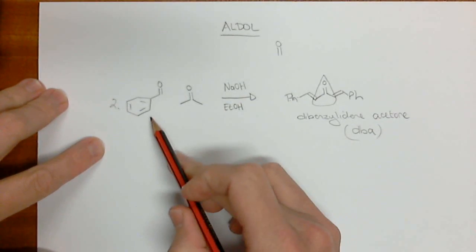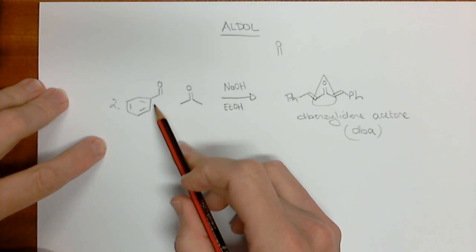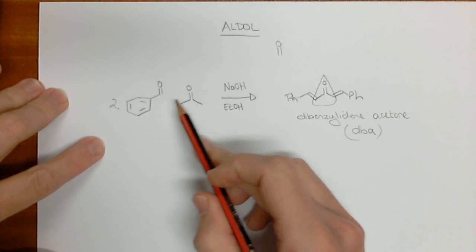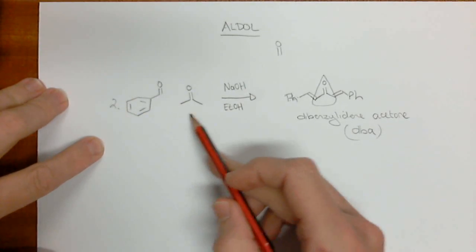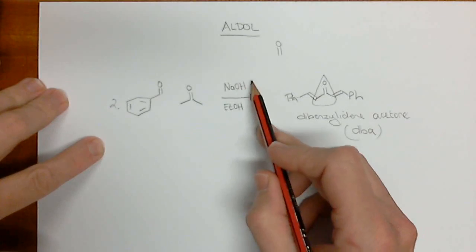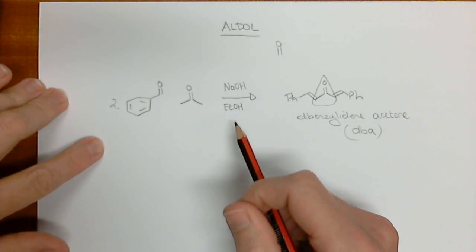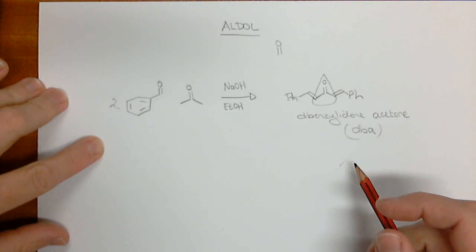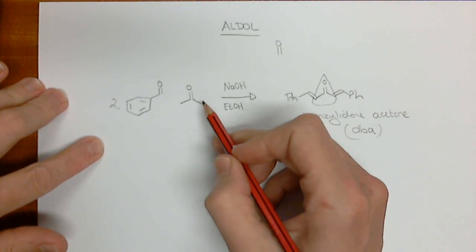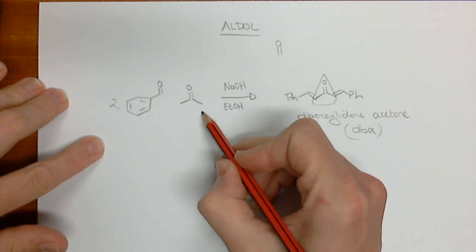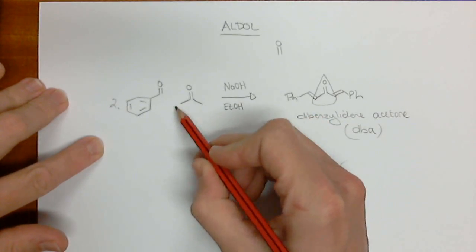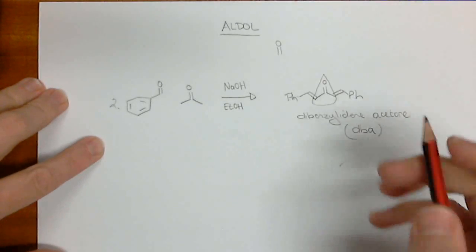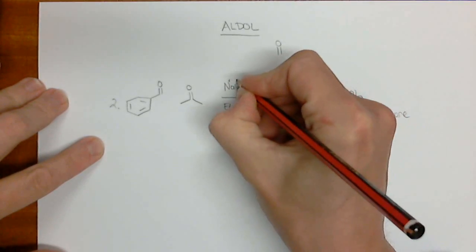We've got here an aldehyde. The aldehyde has no alpha hydrogen atom, so when we treat it with a base, this is not going to react in any significant way with the sodium hydroxide, which is a very mild base. However, the acetone itself has enolizable protons, which are alpha. It's got two sides. It's symmetrical.